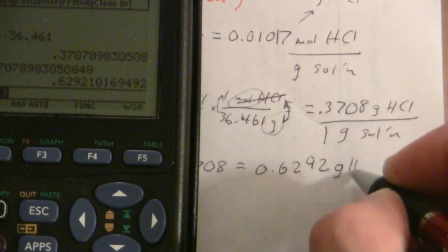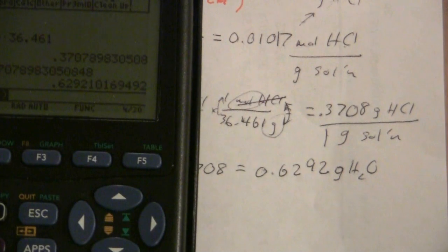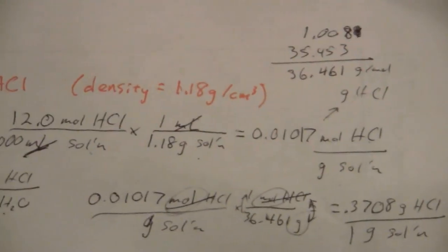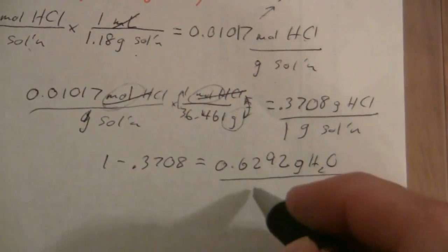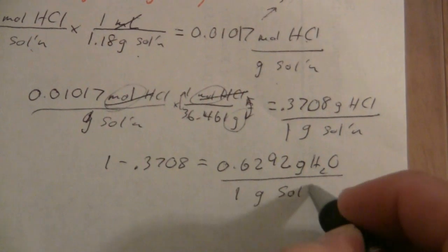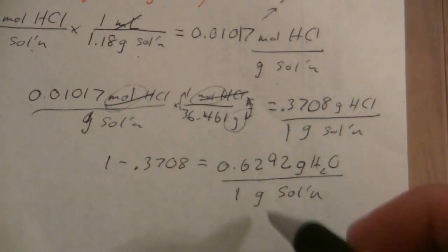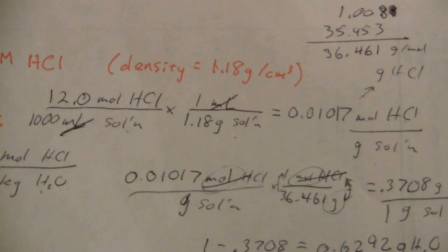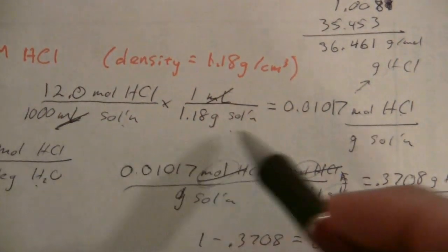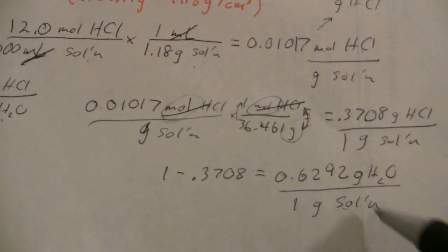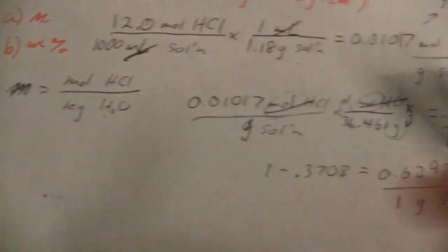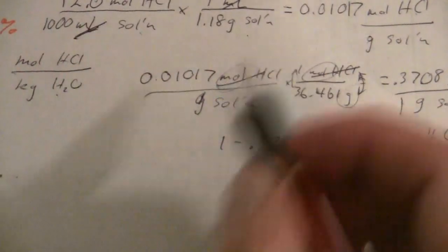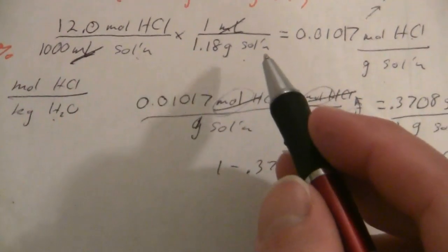And that would be grams of water. Okay, so now that I can, and I should specify that that's the amount of water per gram of solution. Okay, so with this now I can take it back to this point where I have grams of solution, and now I can say well in every gram of solution I've got this many grams of water. Okay, that's what I can use to get my kilograms. Okay, so let me rewrite this down a little bit.